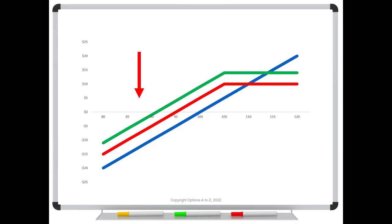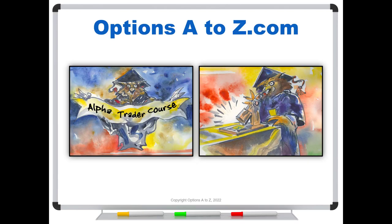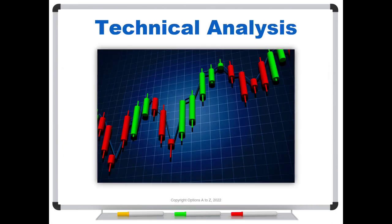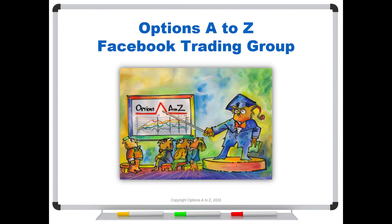And so for anyone who'd like to learn more about the arts and science of options trading, please check out the Alpha Trader course, Strategy Lab, and a Technical Analysis course. You can find it all at optionsAtoZ.com. Also, please join us on the Facebook trading group Options A to Z, and you can find a link in the description below.